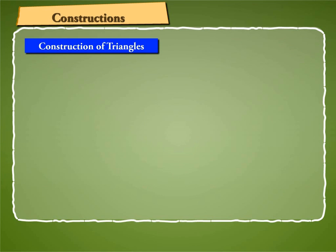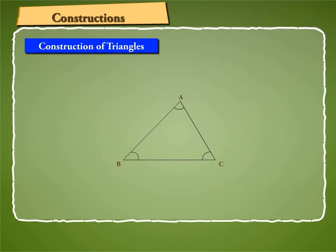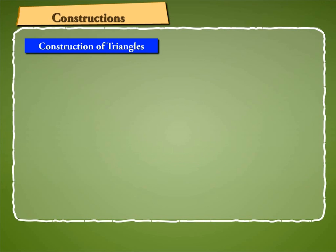Let us now discuss about the construction of triangles. Since a triangle has six elements, that is, three sides and three angles, it is sufficient to have three elements, one of which must be a side, to construct a triangle. Let us now discuss some of the cases of construction of triangles.